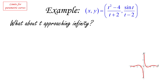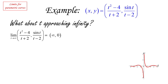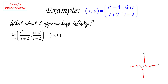What about when t is approaching infinity? Both functions are defined for all values of t except the two we just saw, so we can let t go to infinity. These are two fairly simple limits, and as we go to positive infinity, we end up with infinity comma zero. That means the x-coordinate goes to positive infinity but the y-coordinate goes to zero — that tells us we have a right horizontal asymptote. As the x is approaching infinity, the curve is getting closer and closer to the x-axis, which is the line y equals zero.